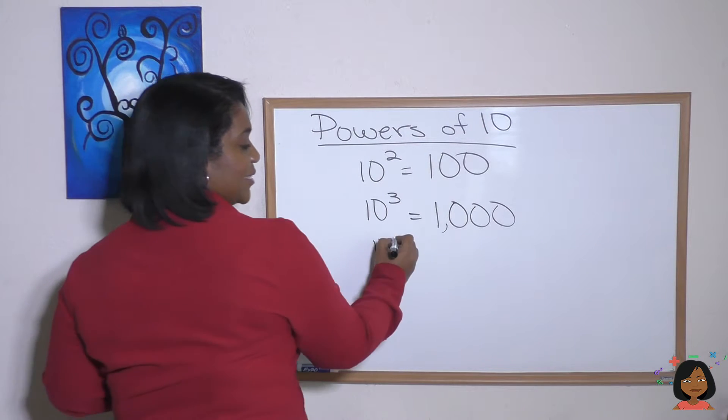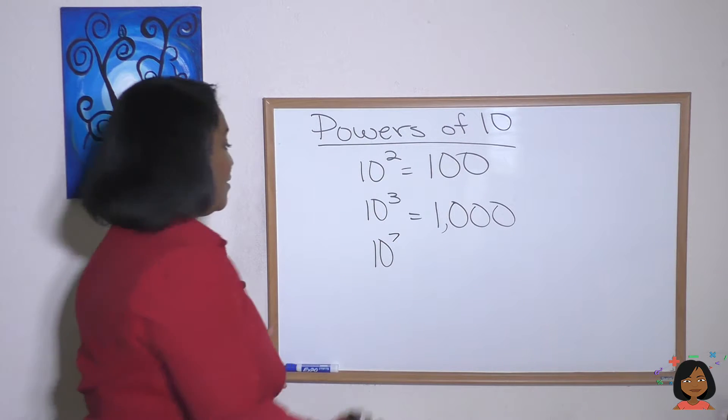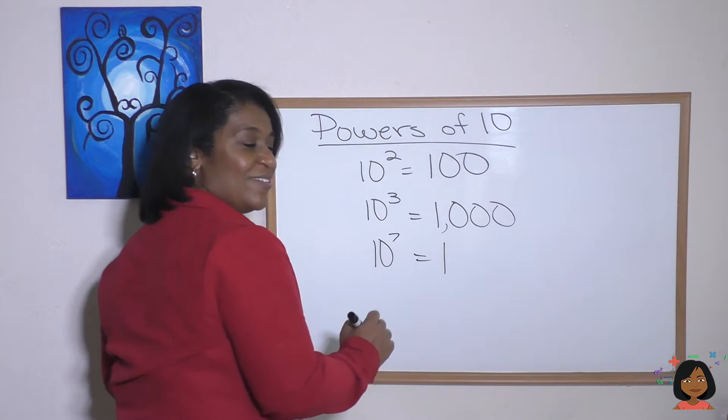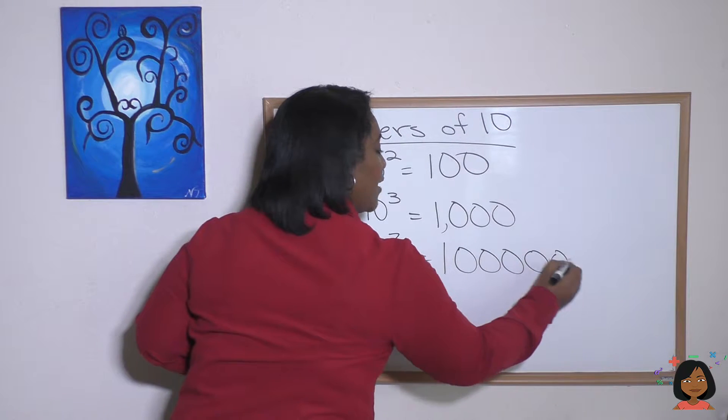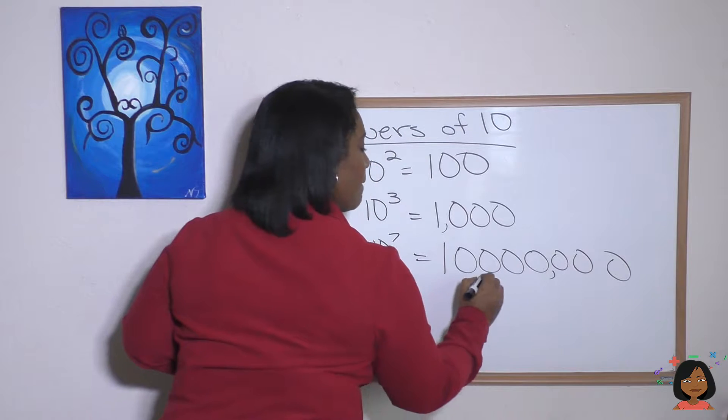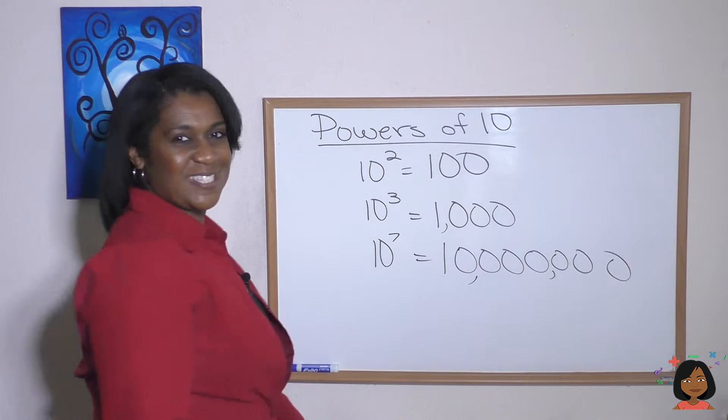What about 10 to the, let's say the seventh? Okay, that's going to be one with seven zeros. One, two, three, four, five, six, seven. Boom, boom, which is 10 million.